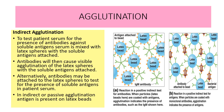Alternatively, antibodies may be attached to the latex sphere to test for the presence of soluble antigen in the patient serum. So in indirect or passive agglutination, antigen is present on the latex bead. In the first diagram, antigens are present on the latex bead and antibodies are responsible for agglutination. In the second case, antibodies are present on the latex bead and they cause agglutination with the help of the antigen present.